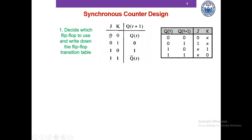When both inputs are 0, the JK flip-flop holds or remembers the last output. When both inputs are 1, the JK flip-flop flips or toggles the output. When both inputs are different — that is, one is 0 and the other is 1 — the output basically follows the J value.